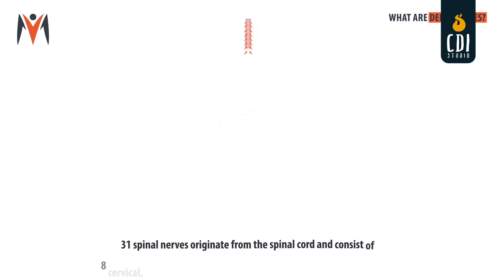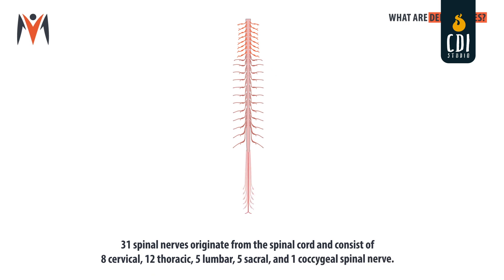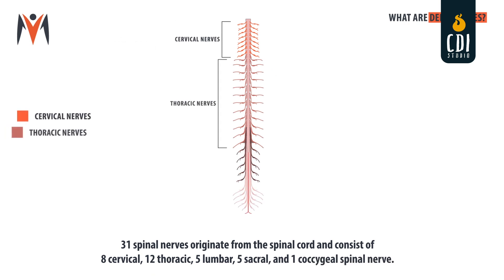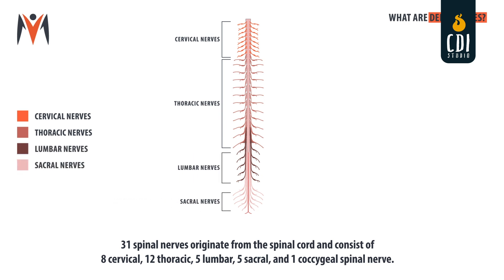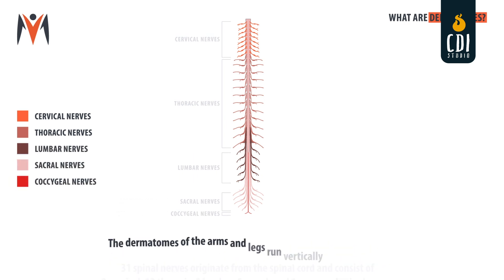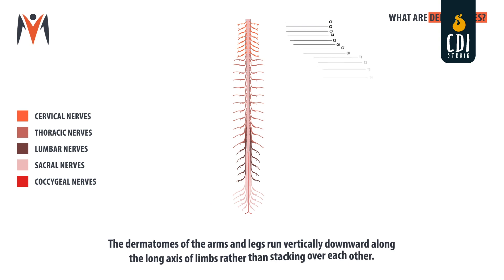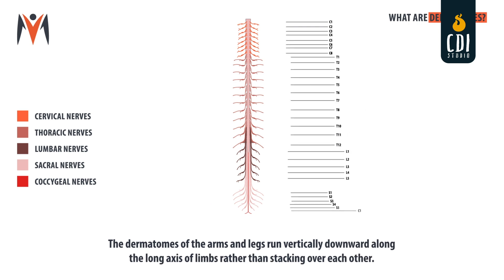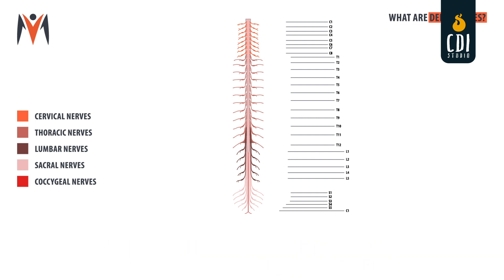31 spinal nerves originate from the spinal cord and consist of 8 cervical, 12 thoracic, 5 lumbar, 5 sacral, and 1 coccygeal spinal nerve. The human body has 30 dermatomes, one less than the number of spinal nerves. This is due to the fact that the C1 spinal nerve has no sensory roots, so there is no associated dermatome.